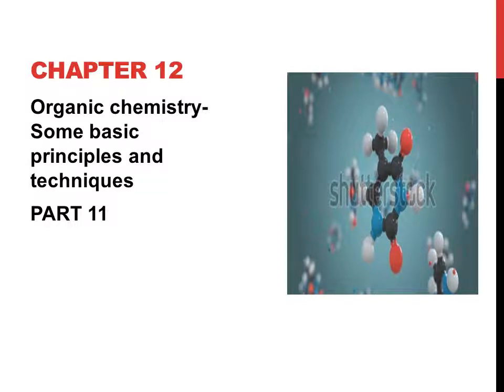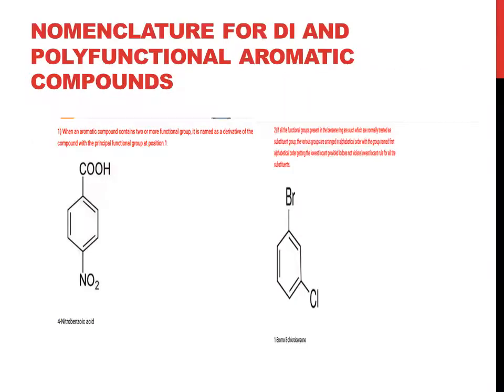Hello students, today we are going to start the 11th part of chapter 12: Nomenclature for di- and polyfunctional aromatic compounds. In the last video we covered nomenclature for polyfunctional aliphatic compounds.